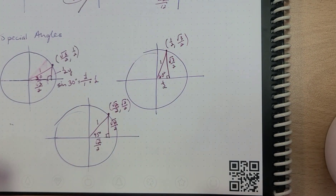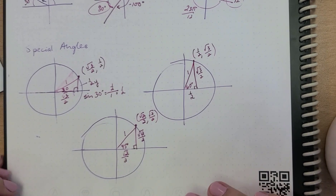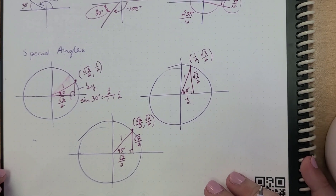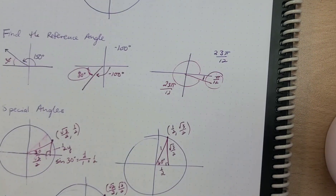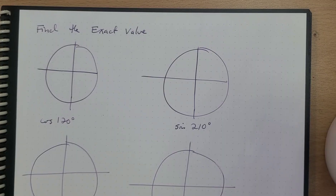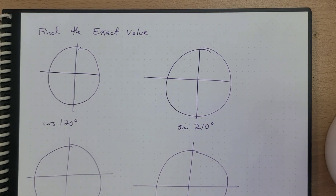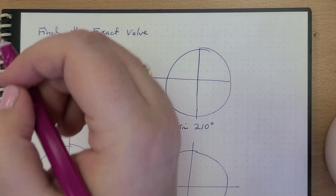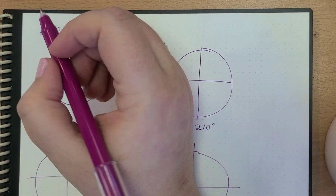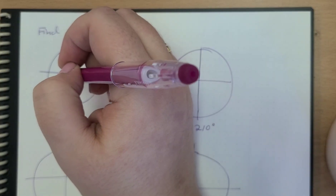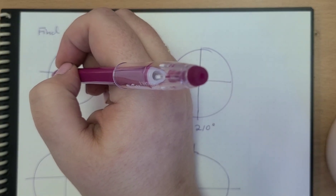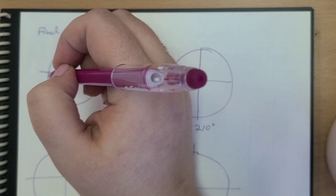That's going to be really important as we go forward using the unit circle. Let's actually use the unit circle to find the exact value. Here we are asked to find the cosine of 120.